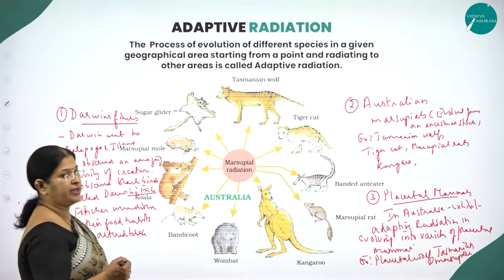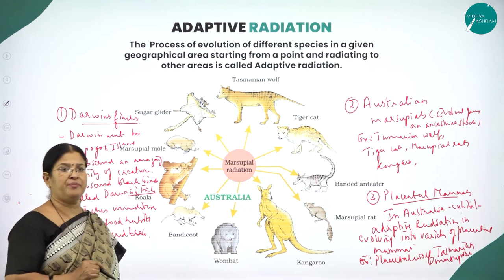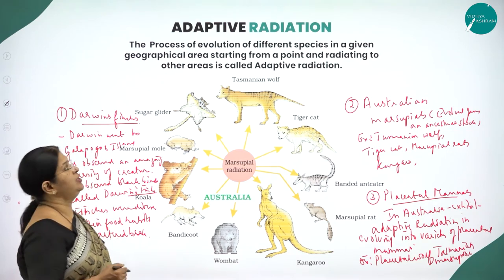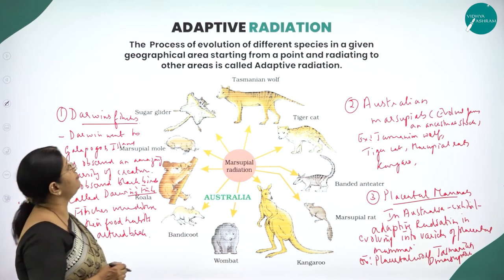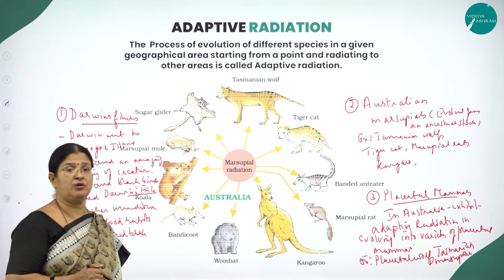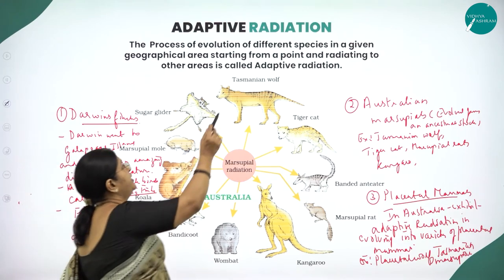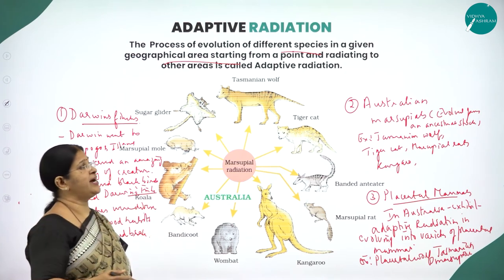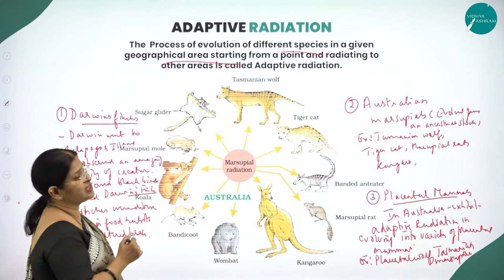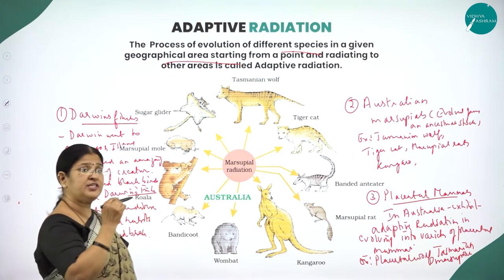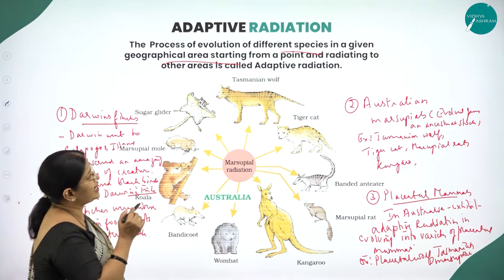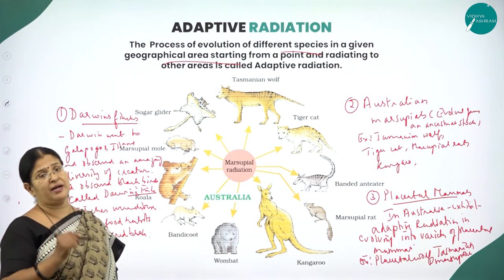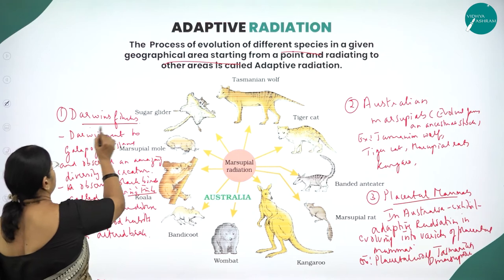Moving on to the next very important concept: adaptive radiation, which is very important from an examination point of view. What is adaptive radiation? The process of evolution of different species in a given geographical area starting from a point and radiating to other areas is called adaptive radiation. The best example to understand adaptive radiation is Darwin's finches.